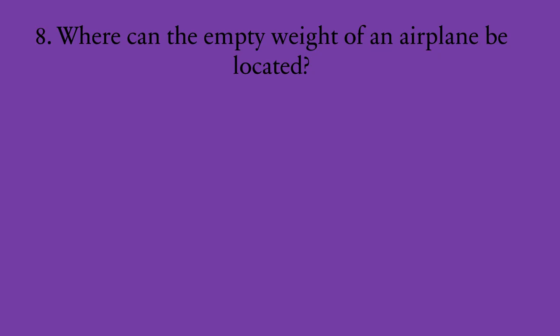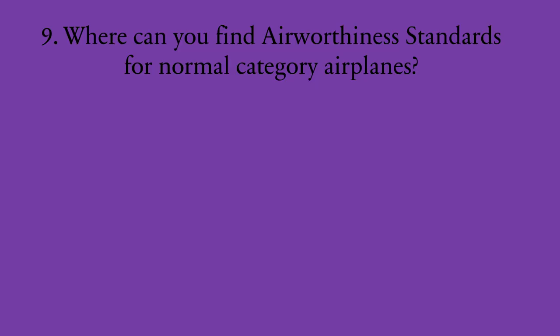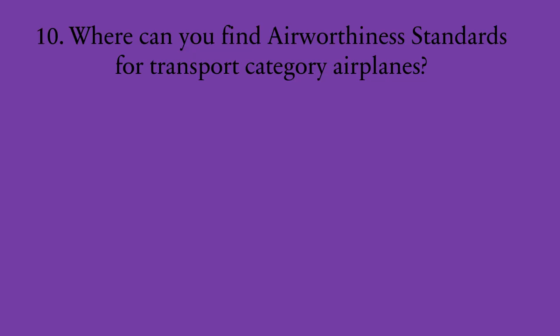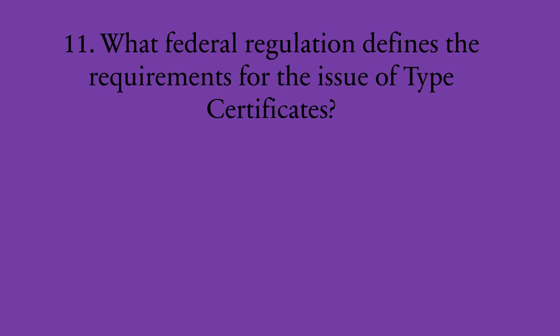Number six: where can you find a list of approved engines for use in a specific model aircraft? In the Type Certificate Data Sheet, or TCDS. Number seven: where can the dimensional tolerances be located for a wrist pin installed on an aircraft engine? In the overhaul manual for that engine. Number eight: where can the empty weight of an aircraft be located? In the aircraft's weight and balance records. Number nine: where can you find airworthiness standards for normal category airplanes? In 14 CFR 23. Number ten: where can you find airworthiness standards for transport category airplanes? In 14 CFR 25. Number eleven: what federal regulation defines the requirements for issuing a Type Certificate Data Sheet? 14 CFR 21.